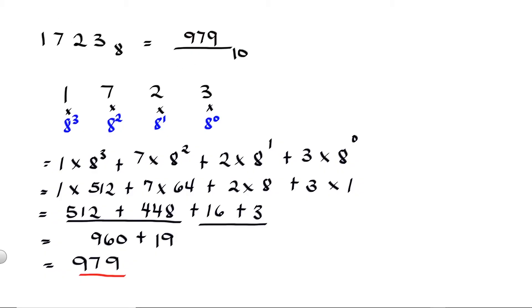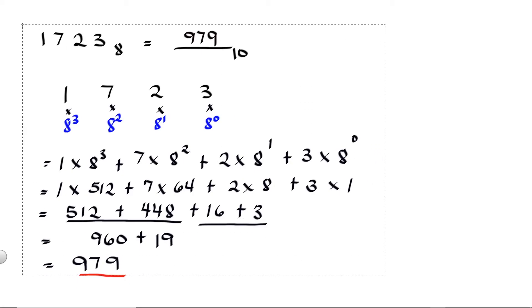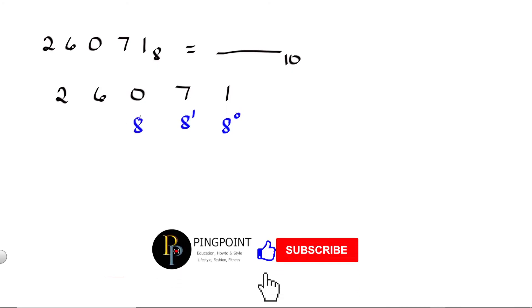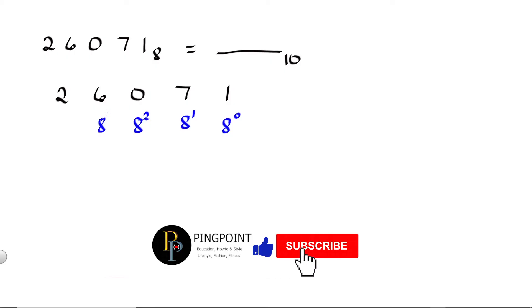For our third example, we will convert 26071 octal into a decimal. Go ahead, pause the video and try to answer this one. For 26071, we are going to multiply each digit by its positional value: the first digit has a positional value of 8 raised to 0, next is 8 raised to 1, then 8 raised to 2, 8 raised to 3, and 8 raised to 4.